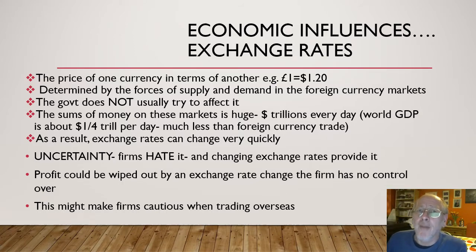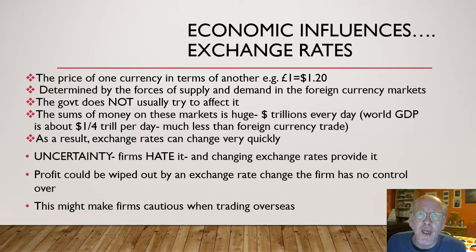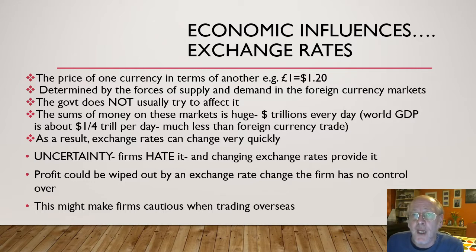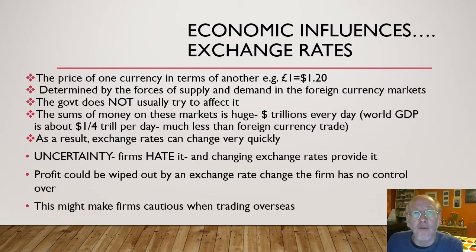The amount of money speculators spend and trade every single day is absolutely astronomical — perhaps four or five trillion dollars, which is far more than the world produces every single day and far more than is least traded. This means huge amounts of money can flow into or away from a currency very quickly, creating uncertainty for firms. Firms can do nothing about exchange rate changes, but they will be affected by them, making them more cautious on export markets.